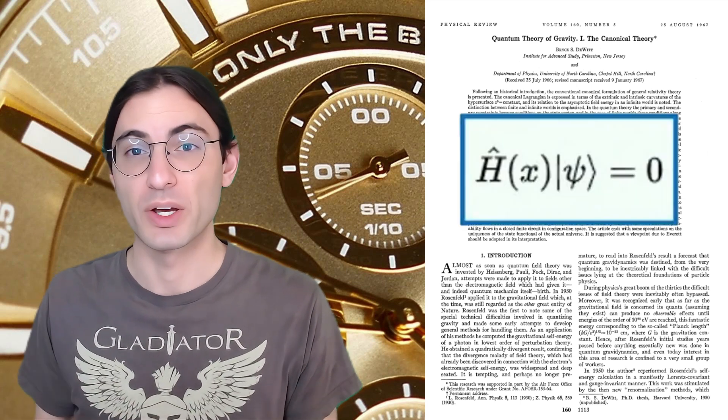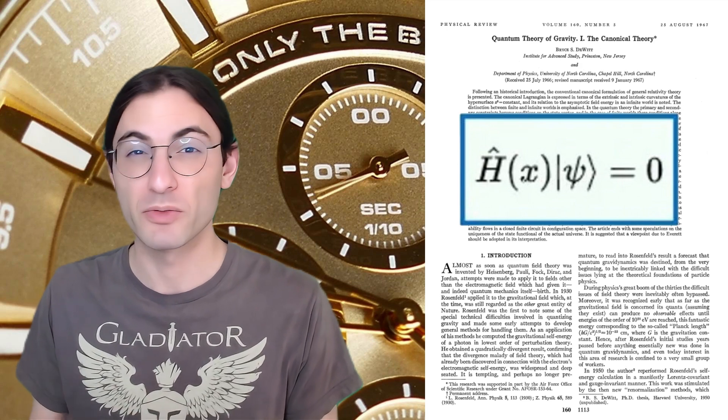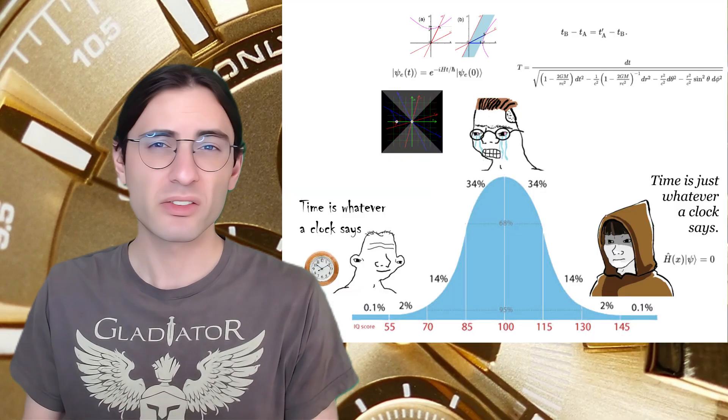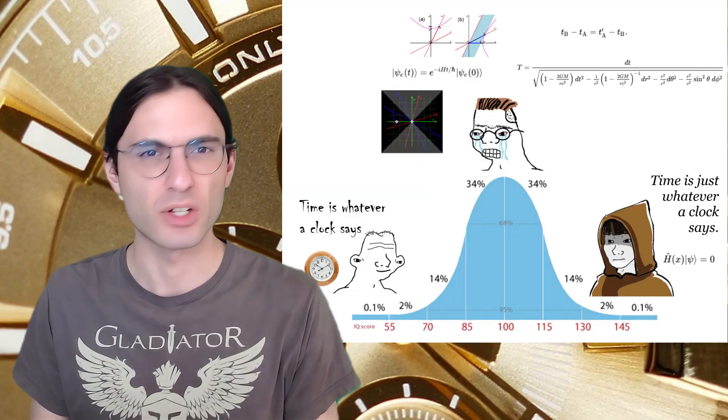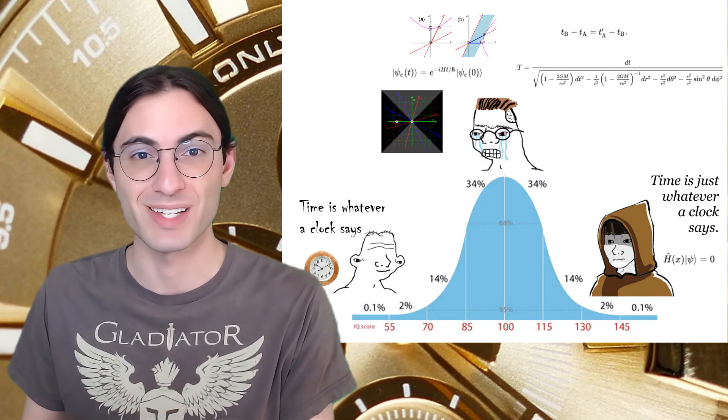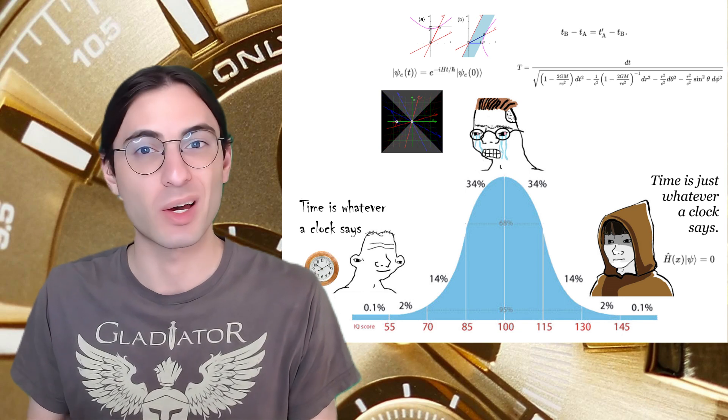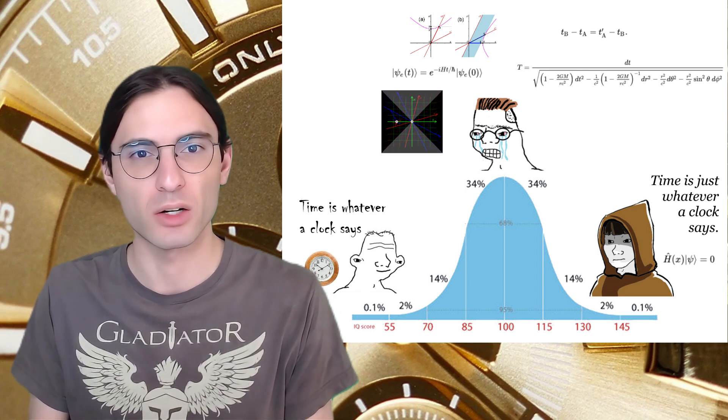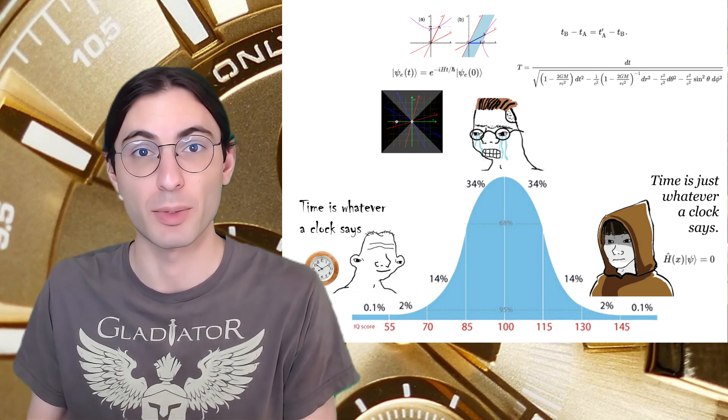In a sense, the Wheeler-DeWitt equation gives some intuition into how the problem of time might be resolved. Because time just doesn't show up in the equation, it suggests that time is an emergent phenomenon internal to the universe as a whole. This is in the same way that wetness is an emergent property of water that isn't built into the equations describing H2O.